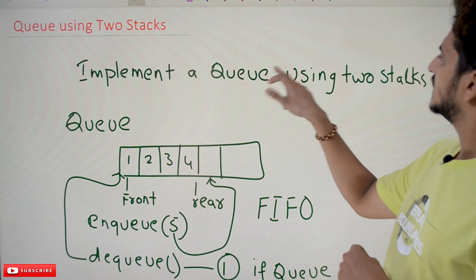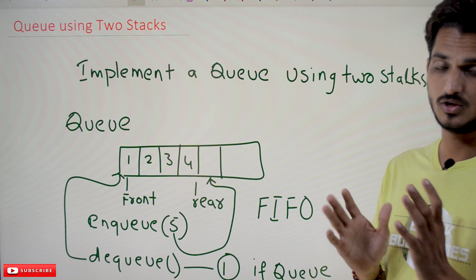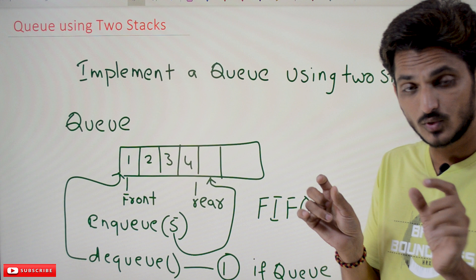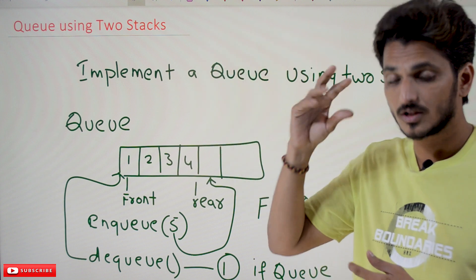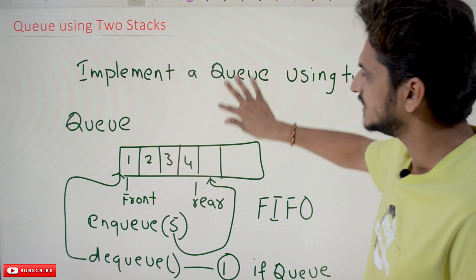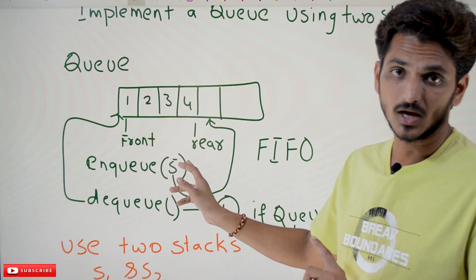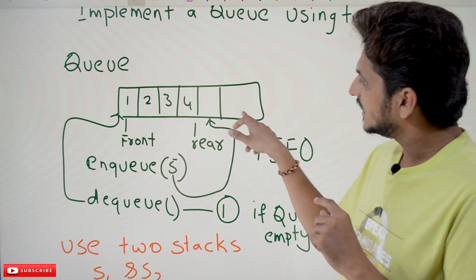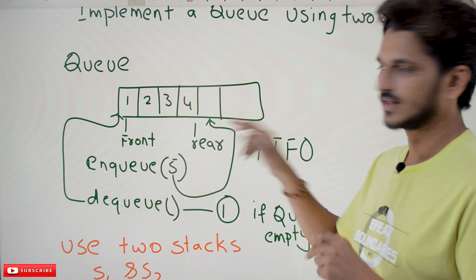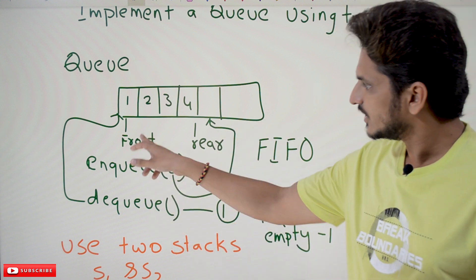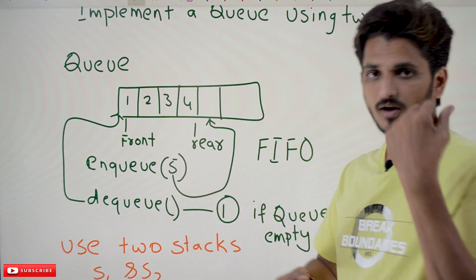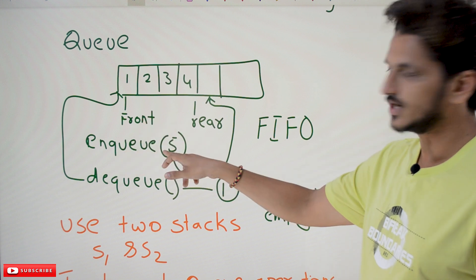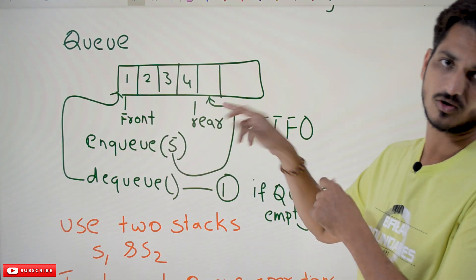Coming to today's class, we need to implement a Queue using two stacks — they are going to give you two stacks and we need to use those stacks to implement Queue operations. First we will refresh the concept of Queue operation. Queue means first in first out. We implemented Queue using an array with two variables: front variable and rear variable. Front variable is for the dequeue operation and rear variable is for the enqueue operation.